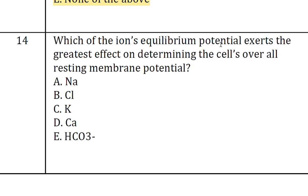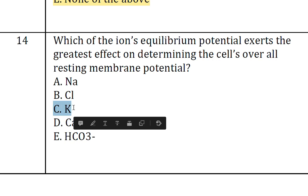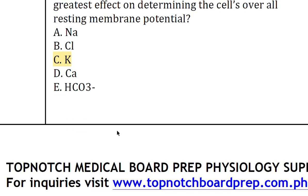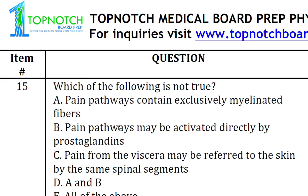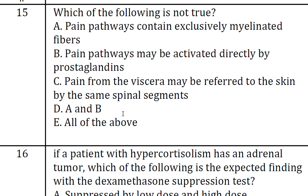The fourteenth question: which ion's equilibrium potential exerts the greatest effect on determining the cell's overall resting membrane potential? The answer is C, the potassium ion.